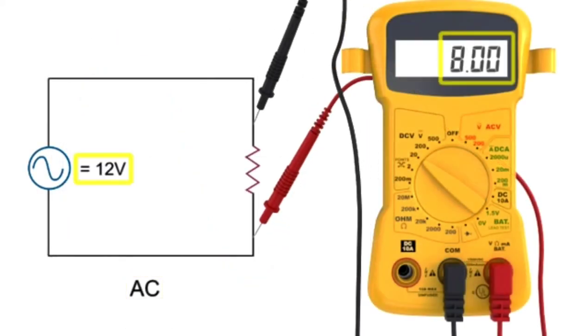Therefore, an AC voltmeter connected across the resistor in the AC circuit would read 10 volts.